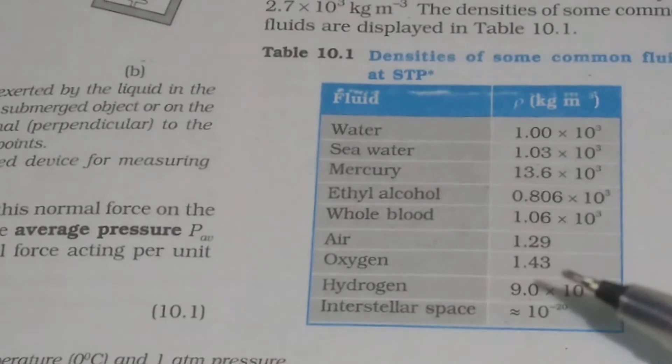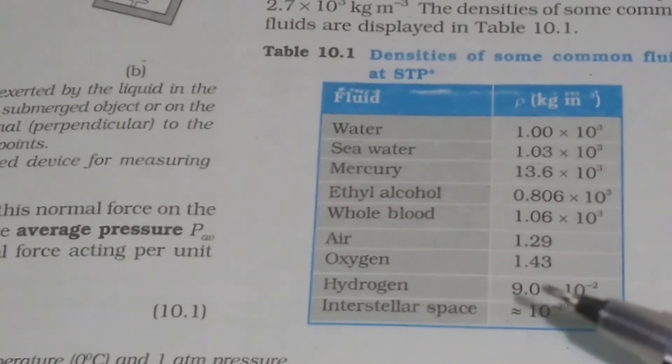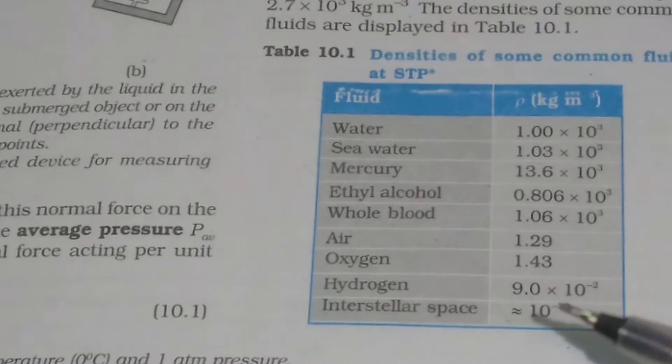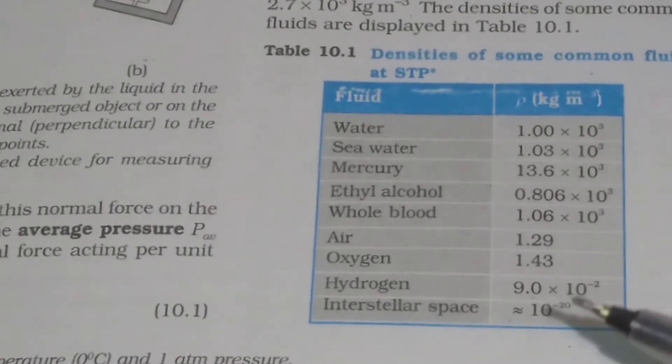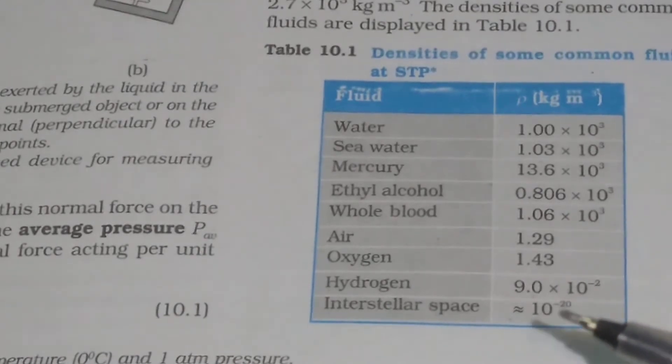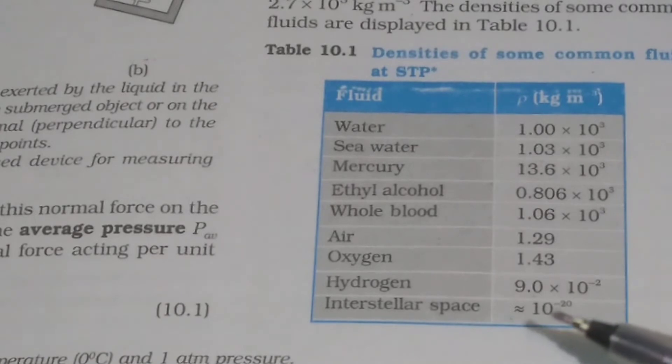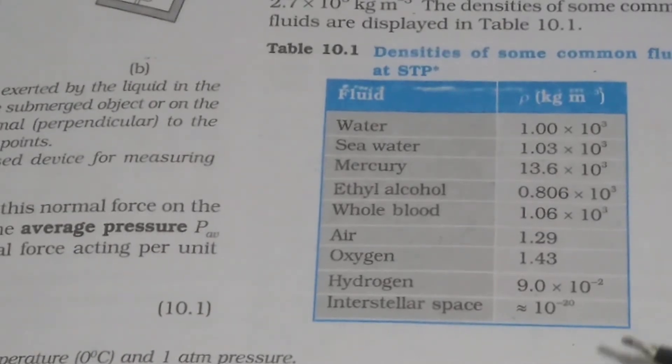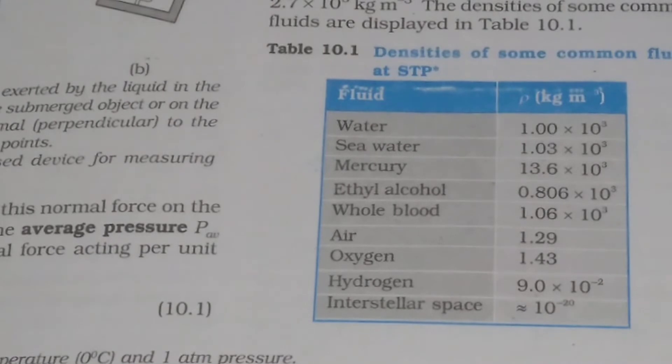For oxygen, its density is 1.43 kg per meter cube. For hydrogen, it is 9 into 10 to the power minus 2 kg per meter cube. And for interstellar space, its density is 10 to the power minus 20 kg per meter cube.